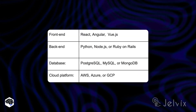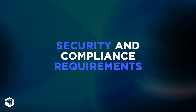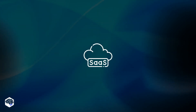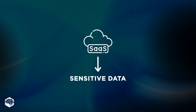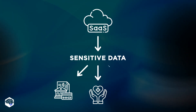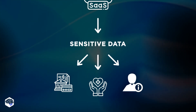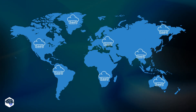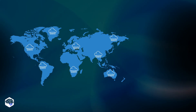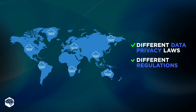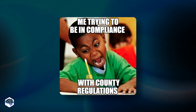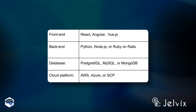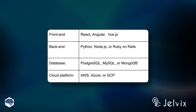The Jelvix team recommends sticking to one of the options depicted in the table. Secondly, it's important to consider security and compliance requirements. Some SaaS products store and process more sensitive data than others — financial data, healthcare data, or personal information. SaaS products used across different geographical locations may also need to comply with different data privacy laws and regulations. The choice of your tech stack depends on the level of strictness in terms of SaaS compliance, and all frameworks on the Jelvix recommended list are proven to tackle security and compliance aspects well.